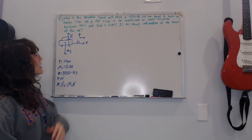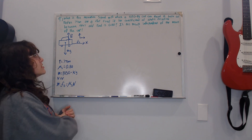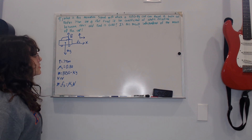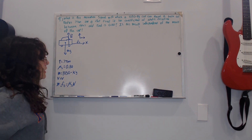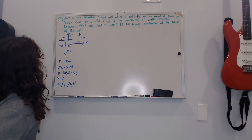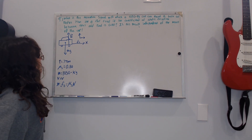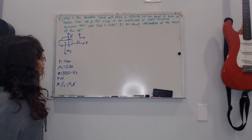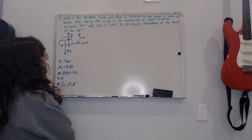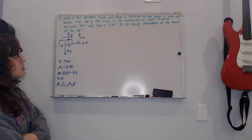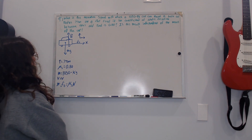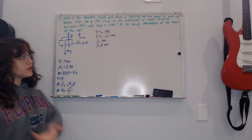This is number nine in the homework and it says: what is the maximum speed with which a 1050 kilogram car can round a turn of radius 77 meters on a flat road if the coefficient of static friction between tires and road is 0.80? Is the result independent of the mass of the car?